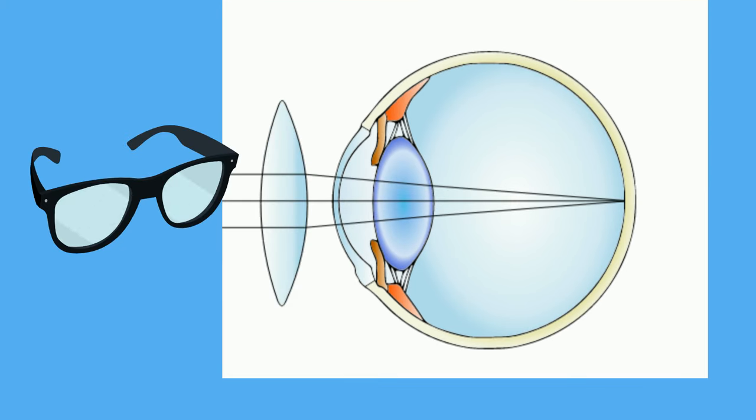Convex lenses are used to correct farsightedness. A convex lens is thicker in the middle than the edges. A convex lens makes the light rays bend towards one another. Before they reach the eye, then the lens of the eyes bends the rays even more, which causes the light to strike the retina, and the image will be in focus.